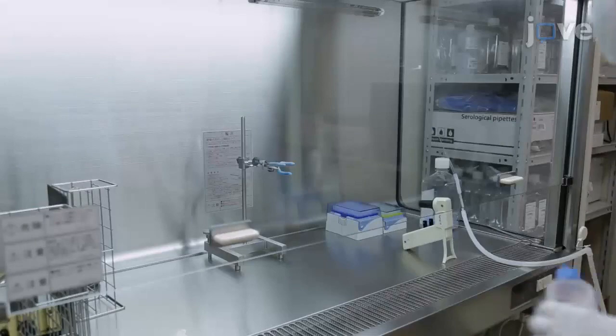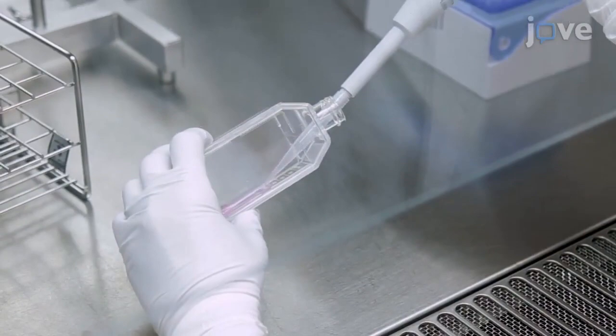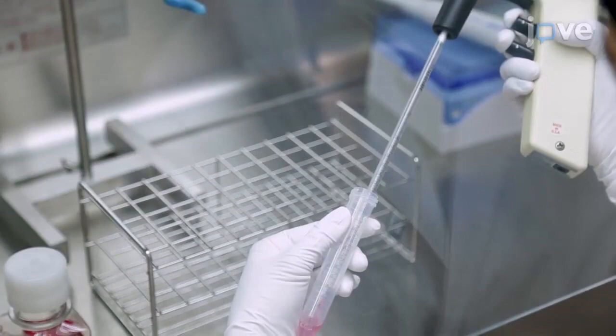Begin with a 25-square-centimeter flask of HEK-293 cells for each vessel to be seeded. Dissociate the cells using 0.25% trypsin EDTA solution and collect cells via centrifugation.